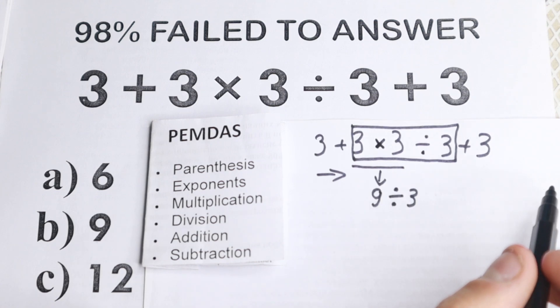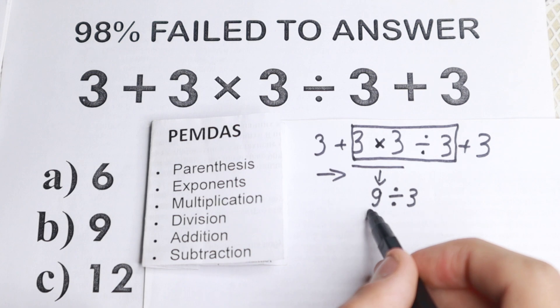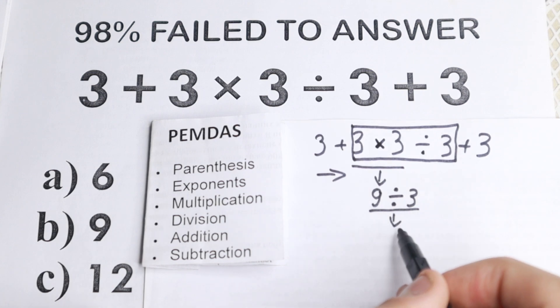And we still have division by 3. Division by 3, which is really great, because we can easily divide it. 9 ÷ 3 = 3.